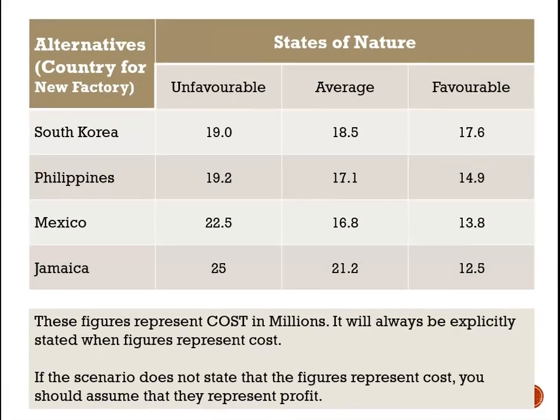We are going to take you to an exercise where we do a decision tree to represent this problem. We are looking at alternatives for building our new factory, and the countries we are looking at are South Korea, Philippines, Mexico, and Jamaica. The figures in the table represent costs in millions to complete the factory under different states of nature.